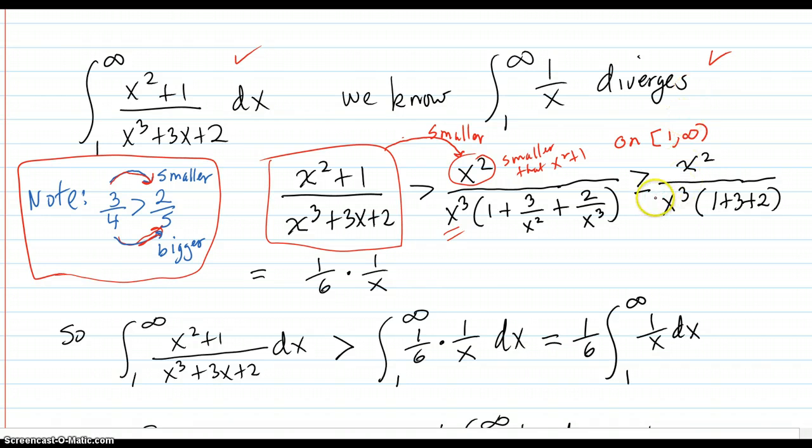Then that's greater than or equal to, on the interval 1 to infinity, which is where my x values are. This fraction here is greater than or equal to x² over x³. That's the same. 1 is the same.